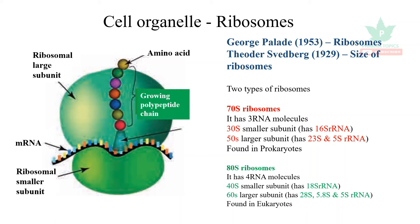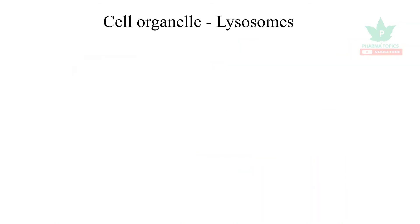Prokaryote ribosomal subunits contain 16S, 23S, and 5S ribosomal RNA. Eukaryotes, including plants, have 80S ribosomes with four RNA molecules. They have a smaller subunit of 40S and a larger subunit of 60S. The 40S subunit contains 18S rRNA, while the 60S subunit contains 28S, 5.8S, and 5S rRNA.